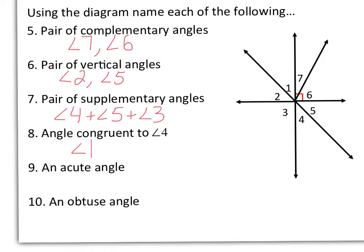9, an acute angle. A bunch of choices here. You can say angle 7, angle 6 is acute, angle 1, 2, 4, 5. And 10, an obtuse angle. So we want to go greater than 90 degrees but less than 180. So again, we're going to need to add some angles together. So I said if I had angle 1 plus angle 7 plus angle 6, I would get an angle greater than 90 but less than 180.